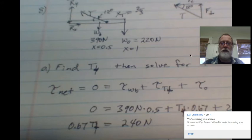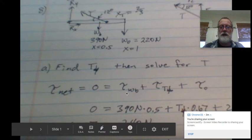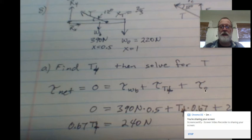So torque net is going to equal zero, which is going to equal the torque caused by the weight of the body, the torque caused by the perpendicular force from the muscles and the torque caused by the object.